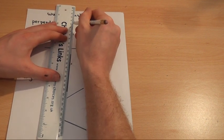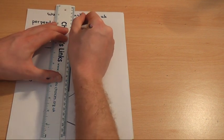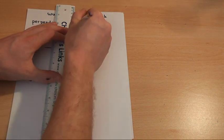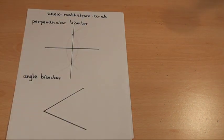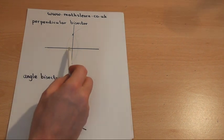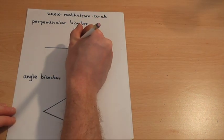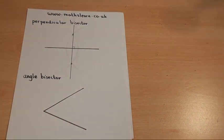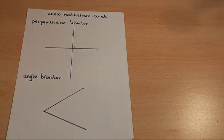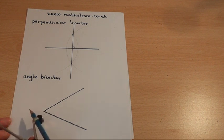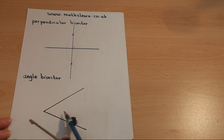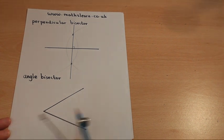You then get your ruler, line up where the two arcs cross, and draw a line through those two points. That line cuts exactly through the center and is at right angles. The second construction is the angle bisector — given an angle, I want to produce an angle of half the size, cutting straight through the center of this angle.